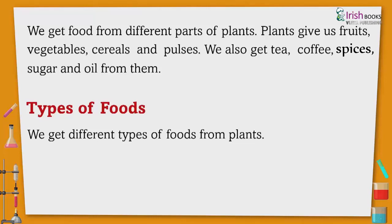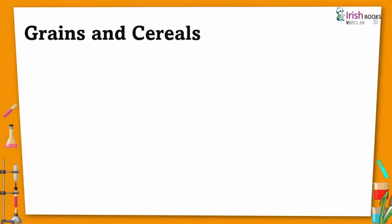We get food from different parts of plants. Plants give us fruits, vegetables, cereals, and pulses. We also get tea, coffee, spices, sugar, and oil from them. Types of foods: we get different types of foods from plants.